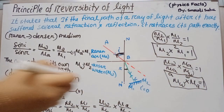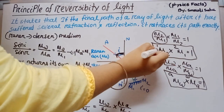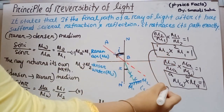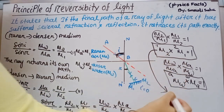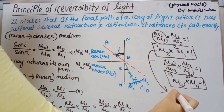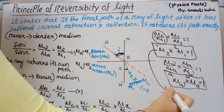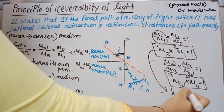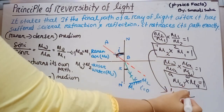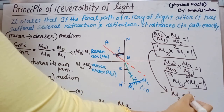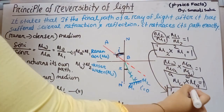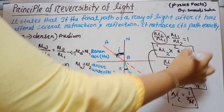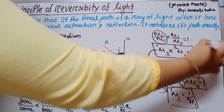From this equation, μ₂₁ = 1 / μ₁₂. Remember both this equation and the previous one.